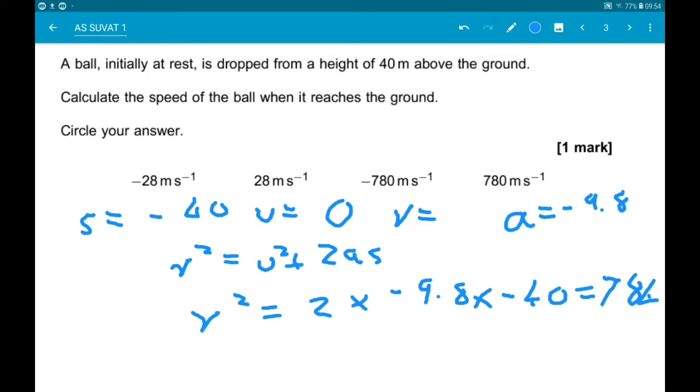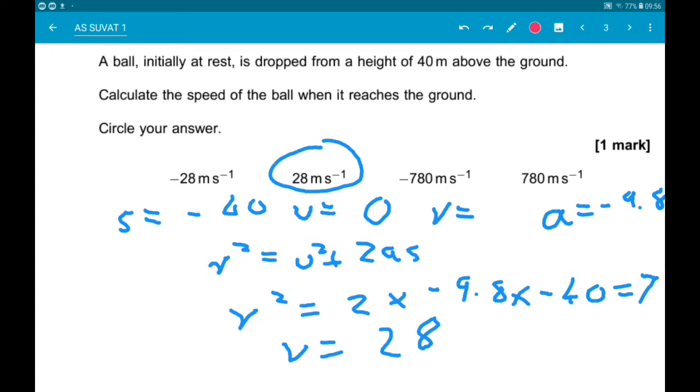Now that gives us 784. For the common sense approach, first of all, speed cannot be negative. Velocity can, speed can't. So it can't be the two negatives. And 780 metres per second is faster than the speed of sound, so there's no way the ball is going that fast. So again, it would be 28 metres per second.